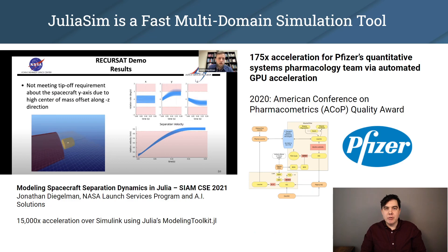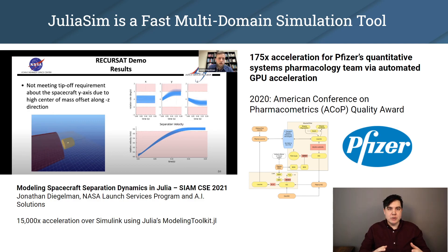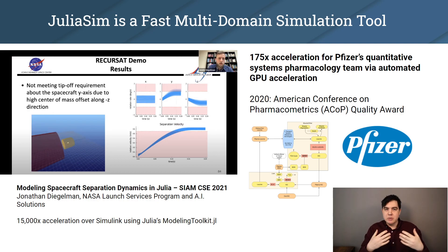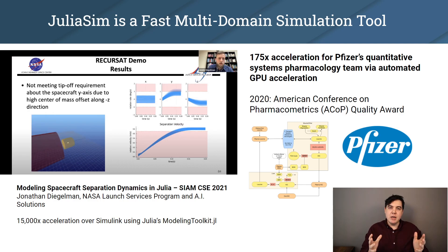We have already shown that in many cases JuliaSim can accelerate people's workflows and the resulting simulations. For example, you can look up on YouTube right now and see a video where a NASA launch engineer has seen a 15,000x acceleration when switching to these Julia tools over previously using Simulink. We've worked with Pfizer to show a 175x acceleration gained by using our GPU-enabled stiff differential equation solving suite.